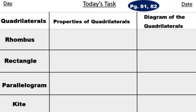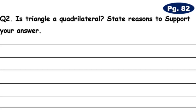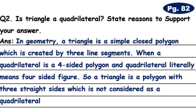Dear students, by keeping all the points of page number 58, you will solve the remaining quadrilaterals on page number 81 and 82. Question number 2 on page number 82 is: Is a triangle a quadrilateral? State reasons to support your answer. In geometry, a triangle is a simple closed polygon which is created by three line segments. A quadrilateral is a four-sided polygon, and quadrilateral literally means four-sided figure. So a triangle is a polygon with three straight sides, which is not considered a quadrilateral.